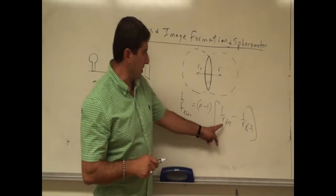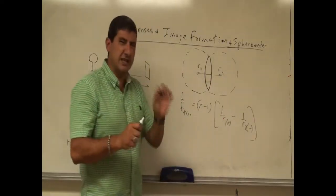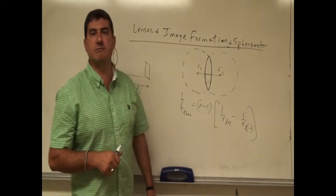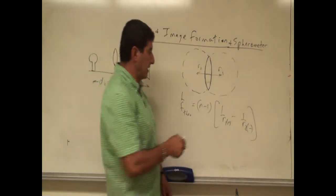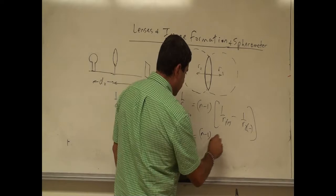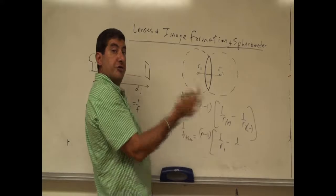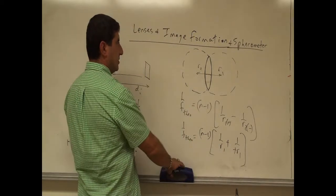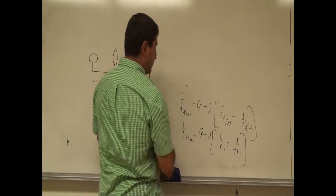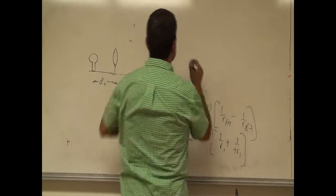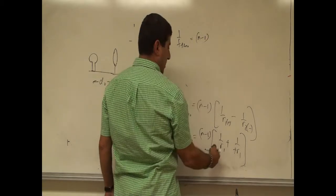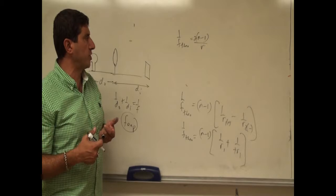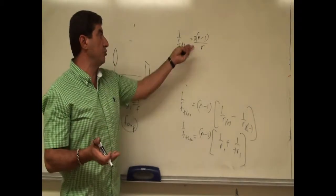In the actual experiment we measure both radii of curvature R1 and R2, and they come out slightly different. For this demo, to make it simpler, I'm going to just measure R1 and assume R2 is the same magnitude but negative. If they're exactly equal, 1 over R1 minus 1 over R2 equals 2 over R, so the equation becomes 1 over F theoretical equals N minus 1 times 2 over R.